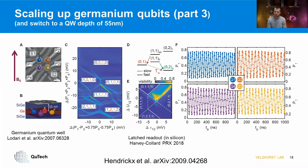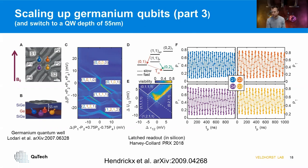Using this readout and forming qubit pairs, we apply electric tones and observe Rabi rotations for all four possible qubits. Although you see some decay, the rotations are quite coherent and we see a decent number of Rabi oscillations in the system.